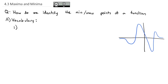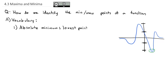The first vocabulary word we need to know is the absolute minimum, and quite simply, the absolute minimum is the lowest point. Let's give this graph some coordinates — 2 up and 2 down. You can see that the absolute minimum, the absolute lowest point, is at y equals negative 2.